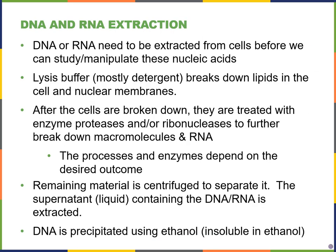The first technique described in chapter 17 is DNA and RNA extraction. If we want to study or manipulate these nucleic acids, we first have to extract them from the cells. We use lysis buffer, which is mostly detergent or some kind of soap-like chemical that breaks down the phospholipids that make up the cell membrane and the nuclear membranes. After we lyse these cells, we treat them with enzyme proteases or ribonucleases if we're trying to isolate, for example, DNA — getting rid of proteins and RNA so we're only looking at DNA. The types of enzymes we use really depend on what we're trying to isolate.